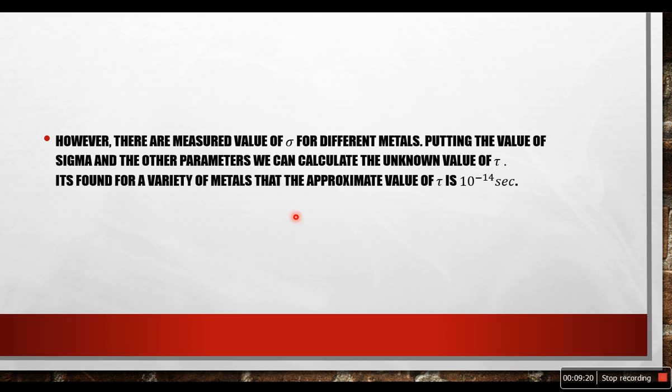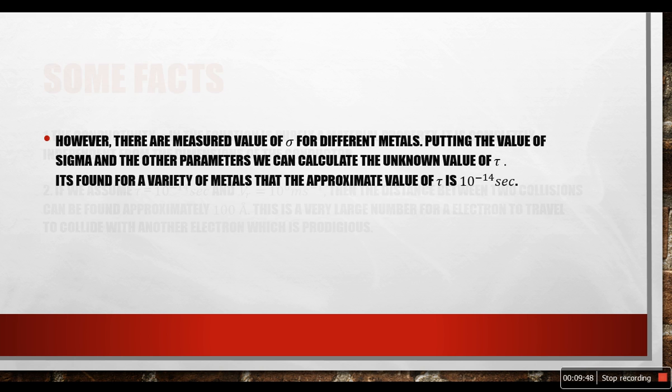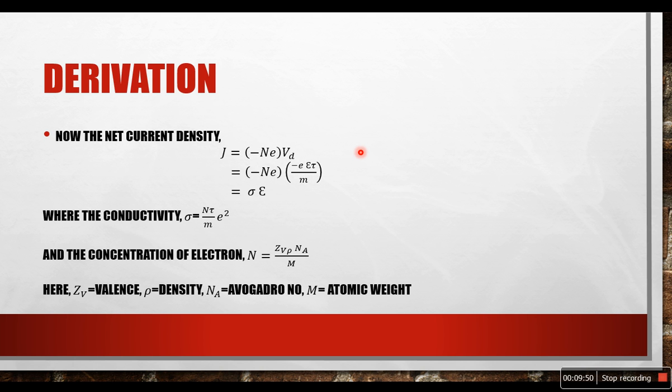However, there are measured values of sigma for different metals. Putting the value of sigma and the other parameters, we can calculate the unknown value of tau. It is found for a variety of metals that the approximate value of tau is 10 to the power minus 14 seconds. So we have derived Ohm's law in terms of conductivity here.